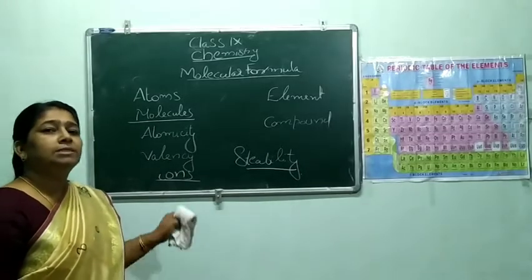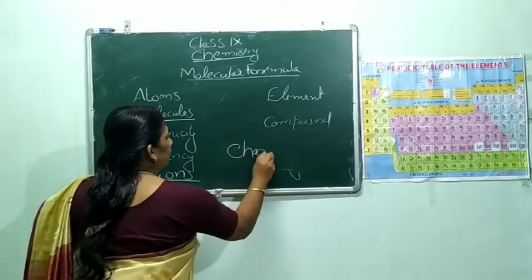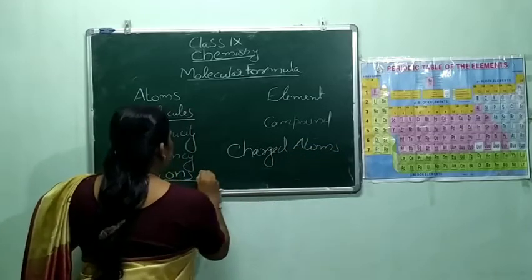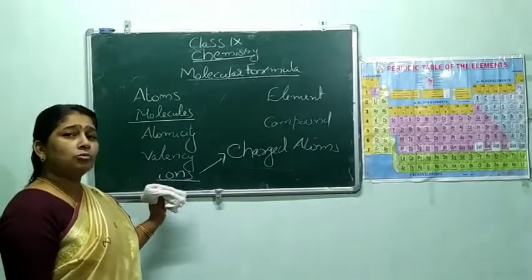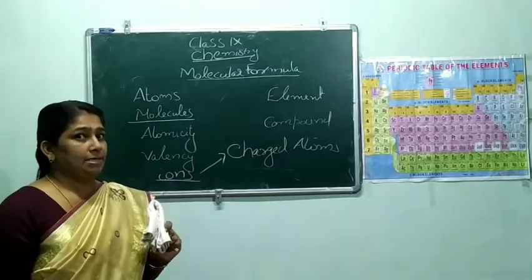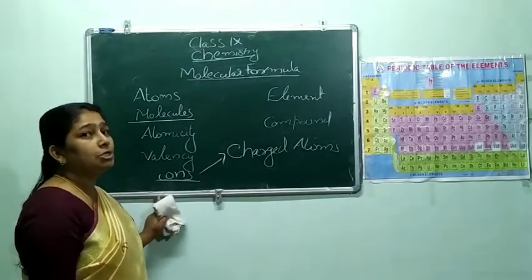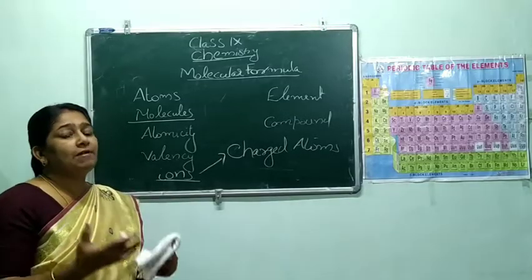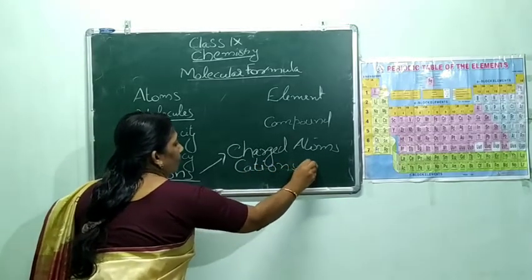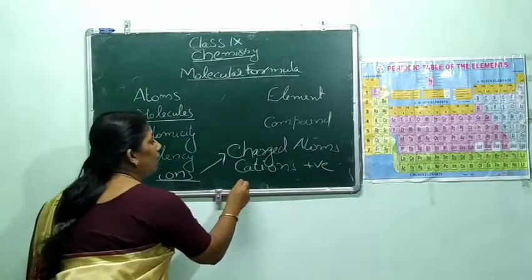What are ions? Charged atoms are known as ions. How do atoms become charged? Either by losing or by gaining electrons, the atoms are converted into ions. If they are losing electrons, they will get positive charge and they are called cations. And if they are accepting electrons, they are called anions.